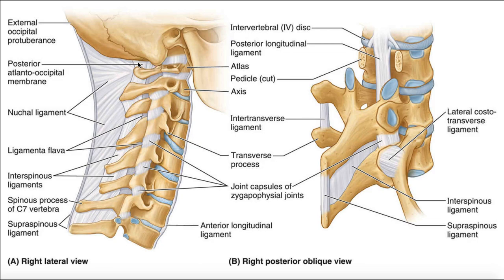This structure right here is actually the posterior atlanto-occipital membrane — it's not quite a ligament, it's more membranous in structure. It connects the occiput to the posterior tubercle and arches of the atlas. Down here, this gray structure is the posterior atlanto-axial membrane. Once you get below C2, those structures essentially become continuous with what's called the ligamentum flava. Individually they are ligamentum flavum, but collectively flava. So that posterior atlanto-occipital membrane and posterior atlanto-axial membrane are continuous with the ligamentum flava, which really starts at the C2-C3 level.